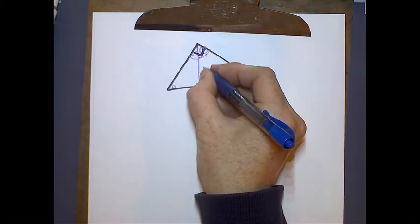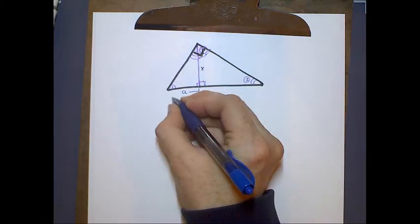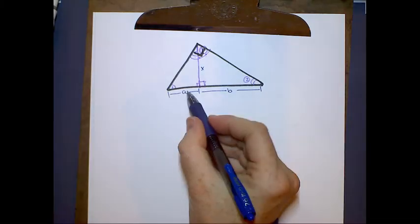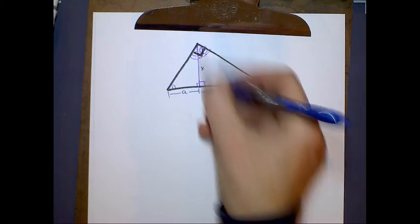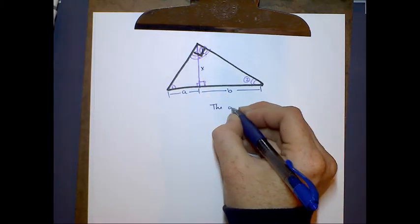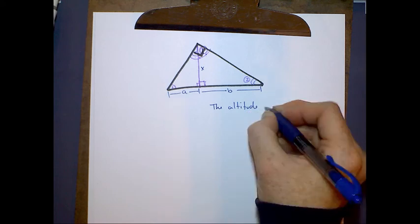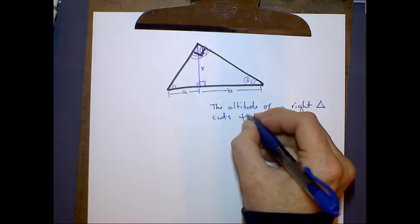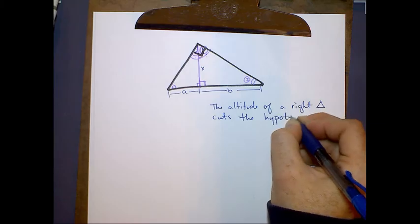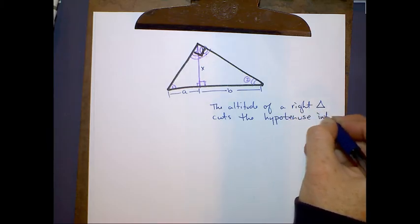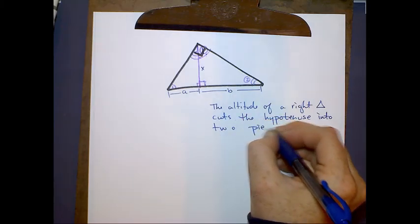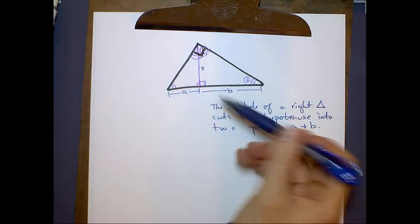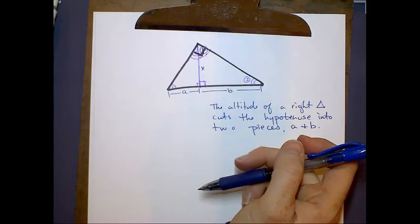And by using this, what we can do is talk about the relationship between the altitude of this triangle and these two segments. So first of all, let's talk about the altitude of any right triangle. This triangle cuts the hypotenuse into two pieces, A and B. Here's A and here's B. And let's see what the relationship is between A and B and X here. And to do this, we have to pick an angle.